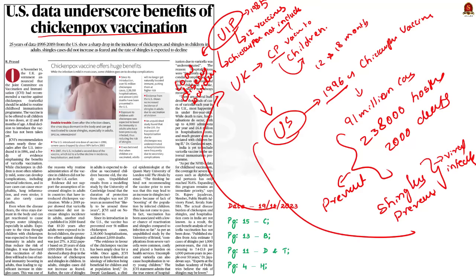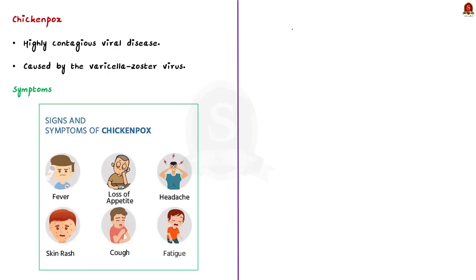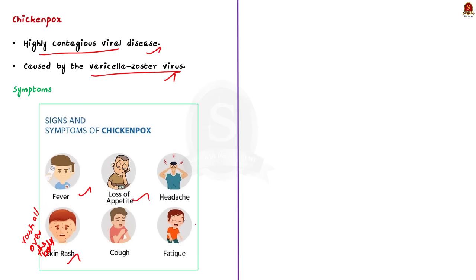Moving forward, let us understand some important points about chickenpox. Chickenpox is a highly contagious viral disease caused by the varicella zoster virus. Symptoms include itchy rashes on the skin that first appear on the chest, back and face, then spread over the entire body including inside the mouth, eyelids and genital area. Other typical symptoms appearing one or two days before the rash include fever, tiredness, loss of appetite and headache.